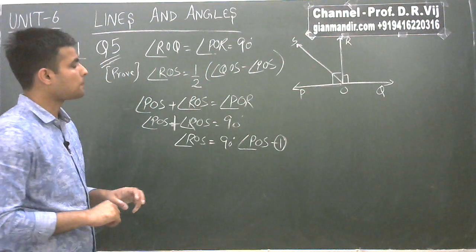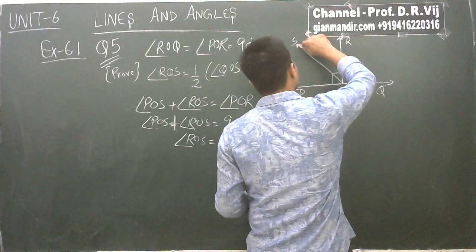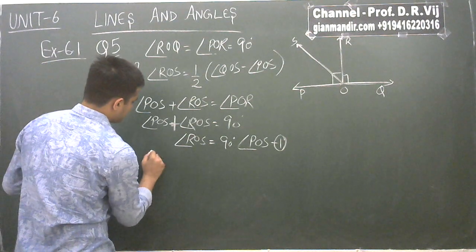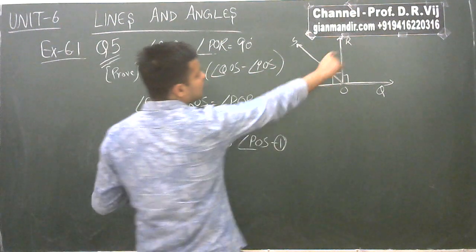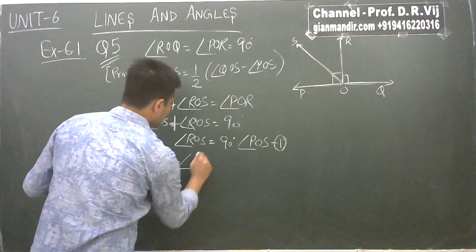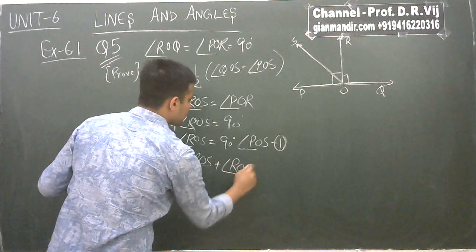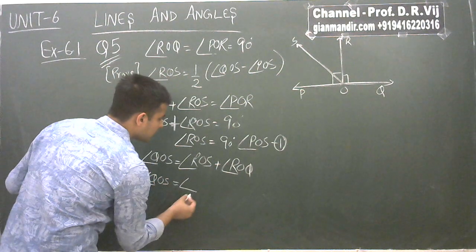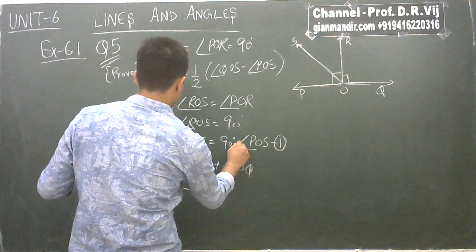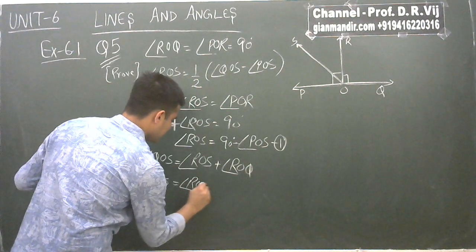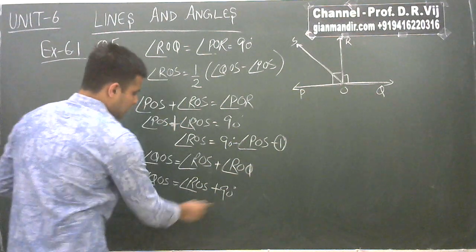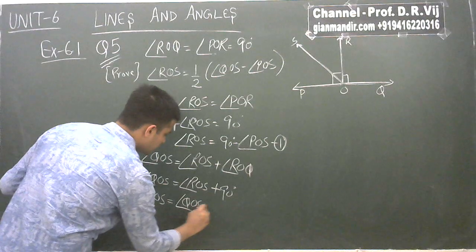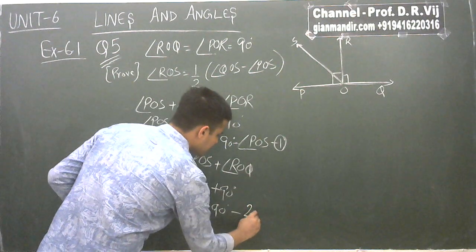Now, angle QOS equals angle ROS plus angle ROQ. Since ROQ equals 90 degrees, angle QOS equals angle ROS plus 90 degrees. Rearranging, angle ROS equals angle QOS minus 90 degrees. This is our second equation.